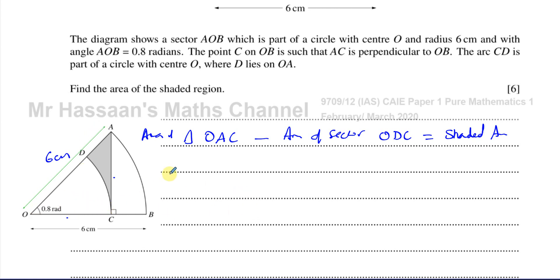Find the area of the triangle. So first of all, the area of the triangle OAC. For both of these, I need to find what OC is. Now, OC, as we can see, is part of this right-angled triangle. This is O. This is C. This angle is 0.8 radians. And this length is 6 centimeters, hypotenuse.